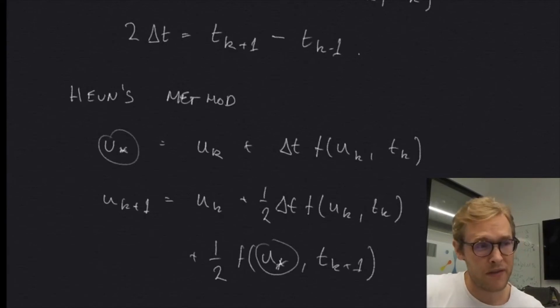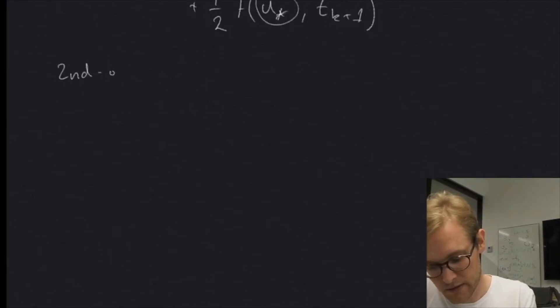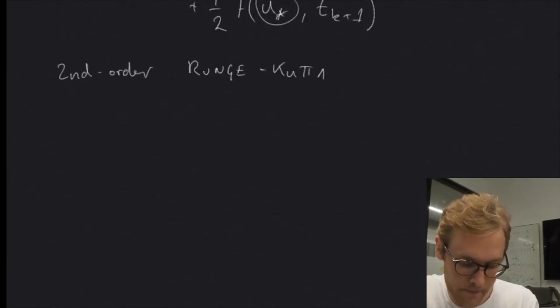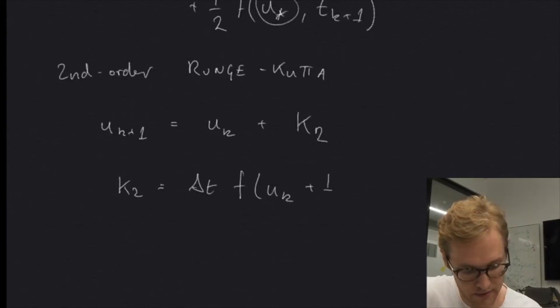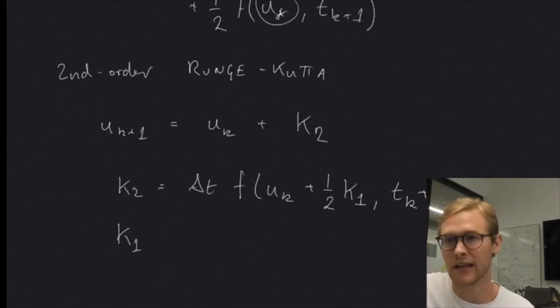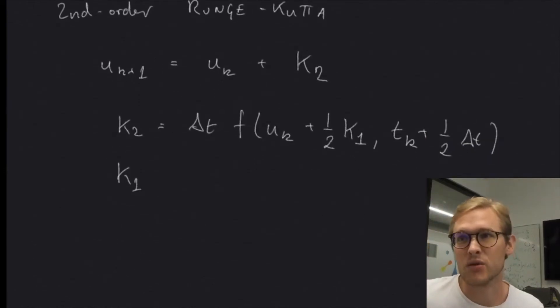There's a range of methods called the Runge-Kutta methods. One of those methods is the second order, the second order Runge, I think they're German, and Kutta methods, and the second order method, we compute the next solution step with the present step or the current step, and we add to it some number K2. And this number K2 is defined as delta T times the input function of the right side side function evaluated at UK plus half of some other number K1, and evaluated at TK plus half a time step. And the K1, which is the last remaining thing, there you go, which is the last thing that we need here, is delta T times the right hand side function evaluated at UK and TK.